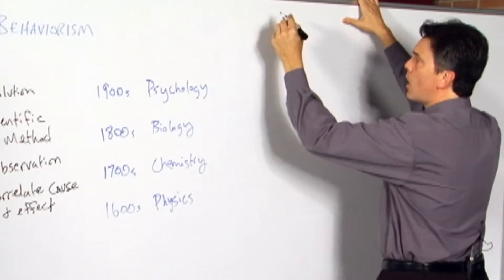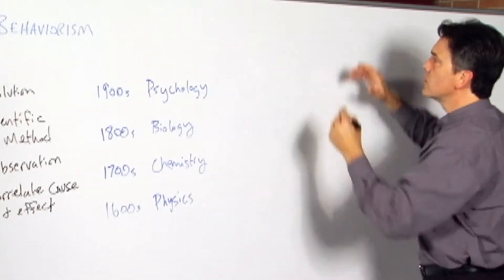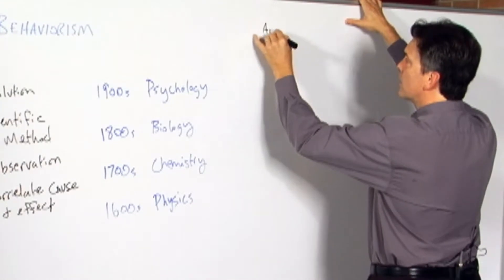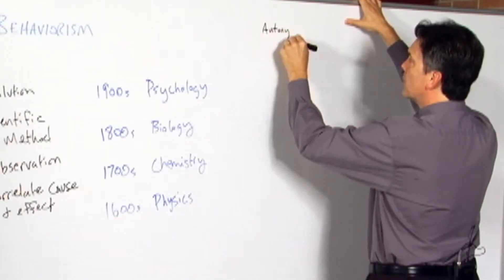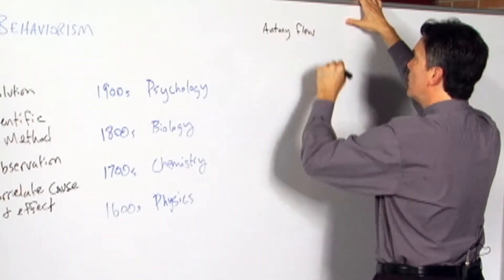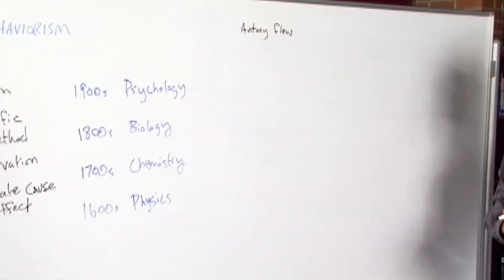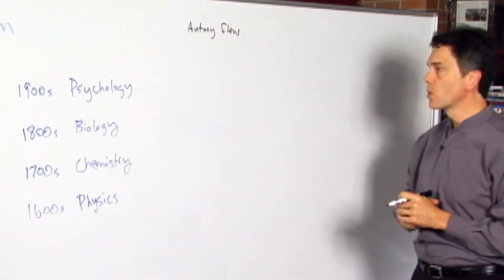Let's take this issue of observation. I want to first tell a story that comes from a philosopher, Anthony Flew, who had some behaviorist leanings at various points in his intellectual career.